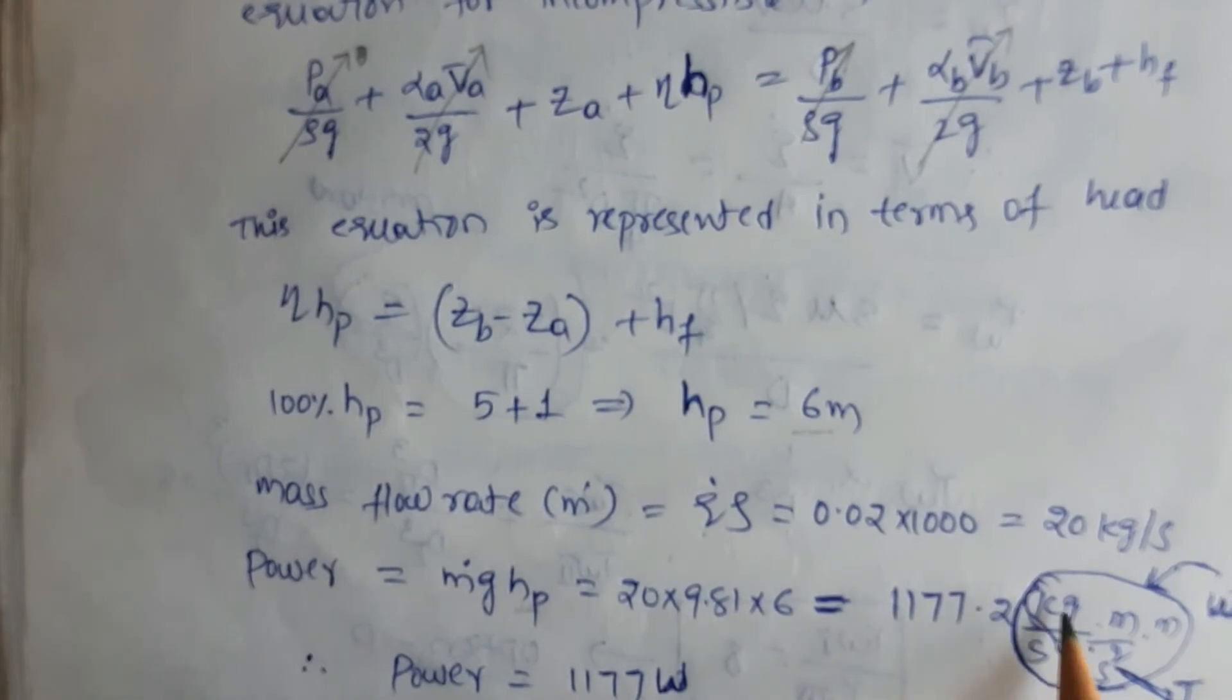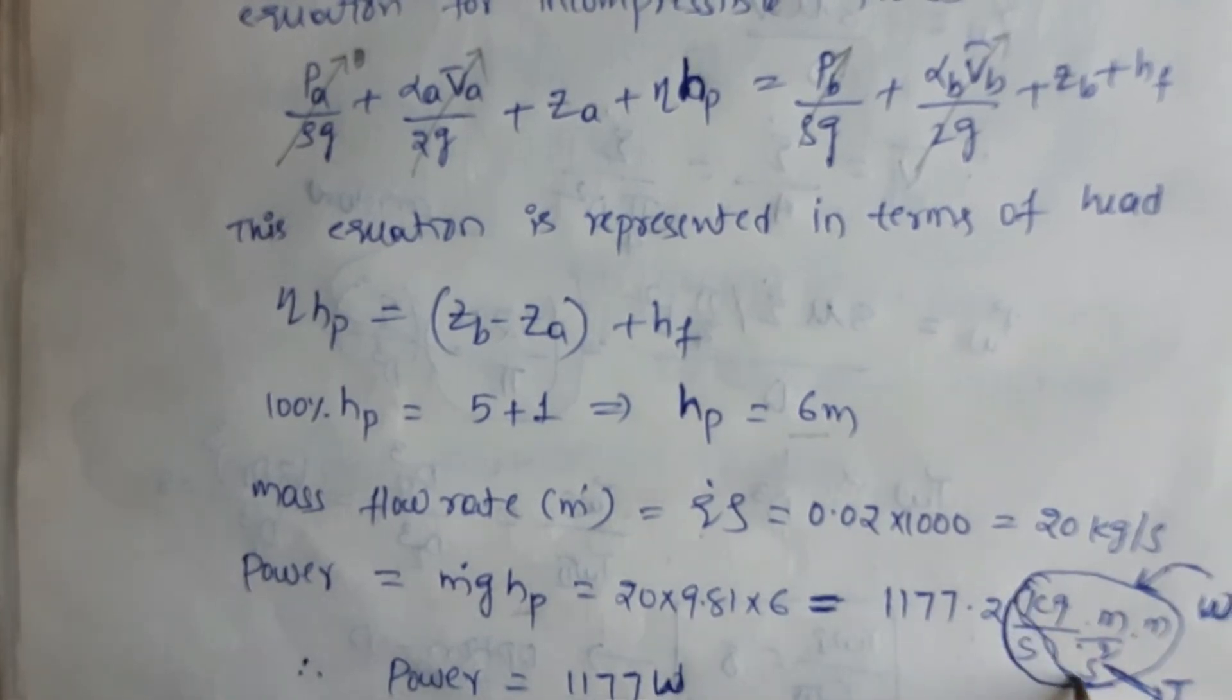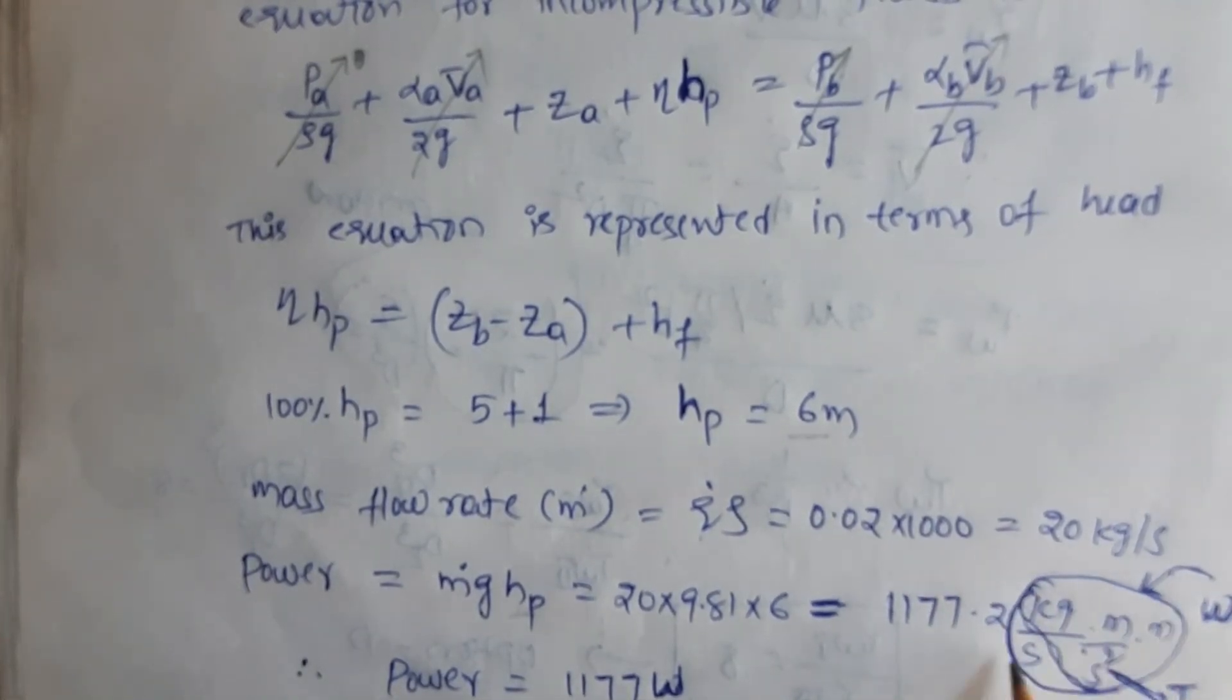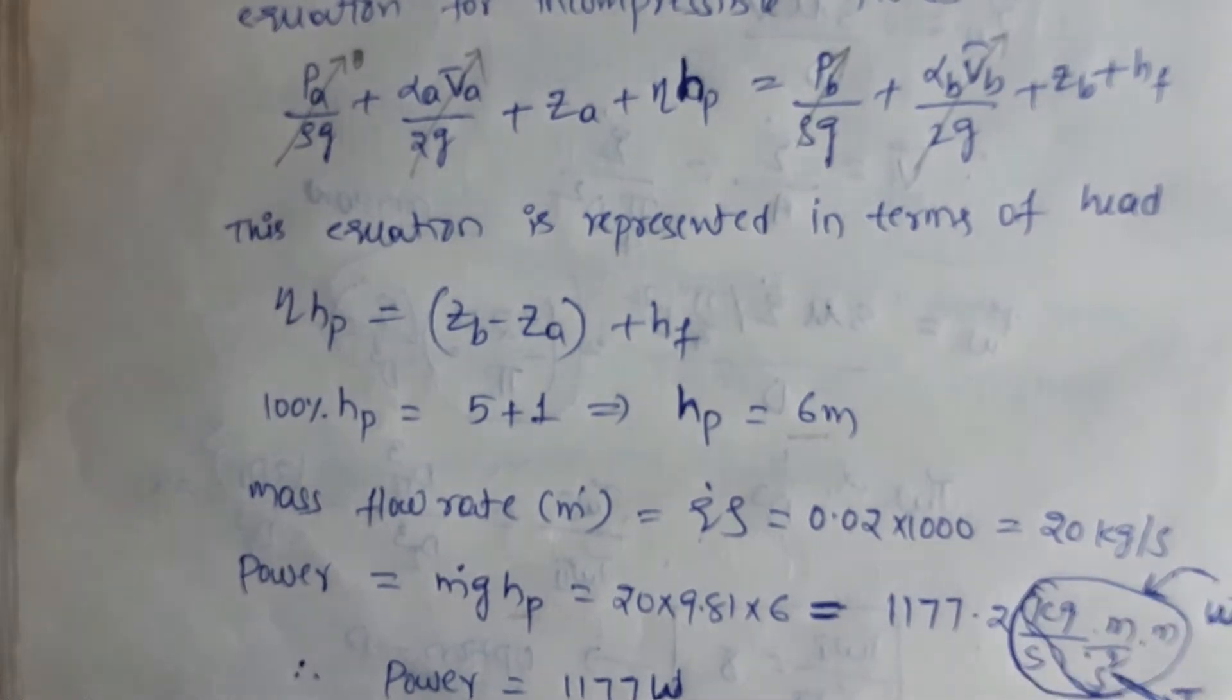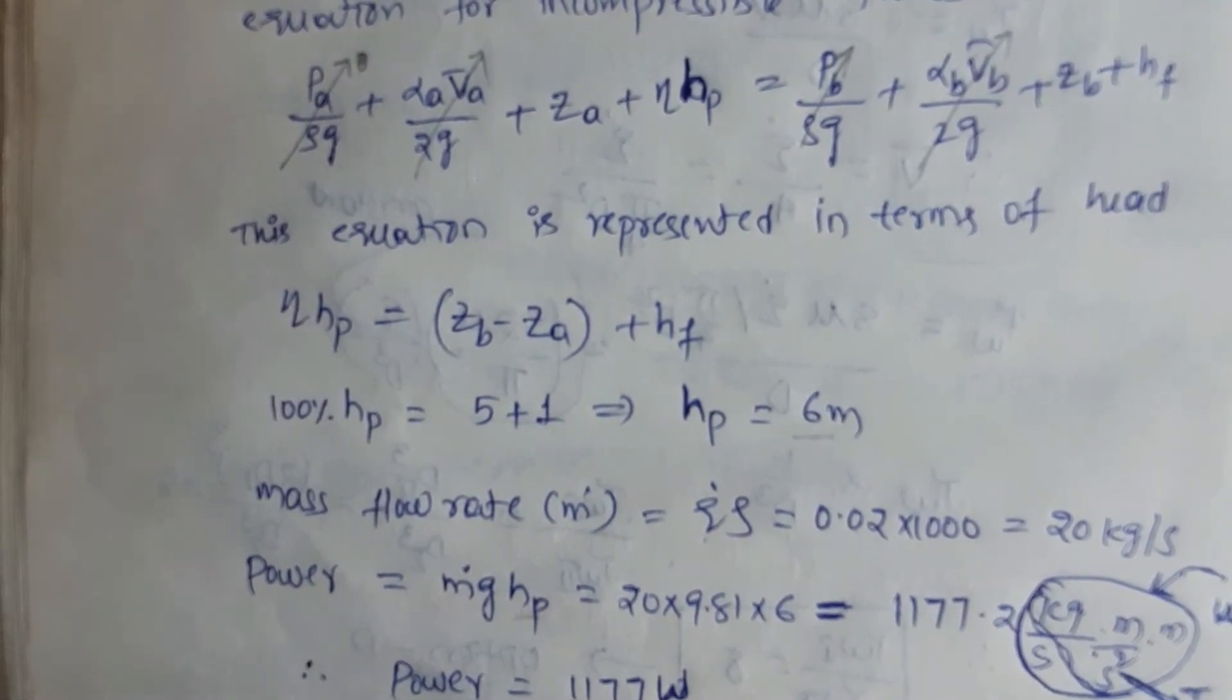The mass units are kg/s, g units are m/s², and h units are meters. These give us joules, and joules per second is watts. Therefore, 1177 watts is the power required to pump the liquid. Thank you.